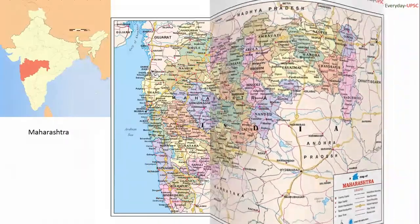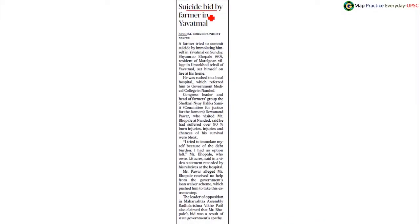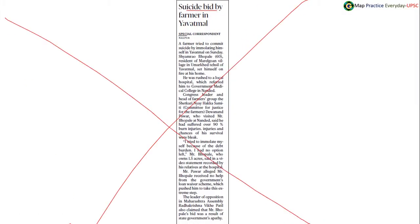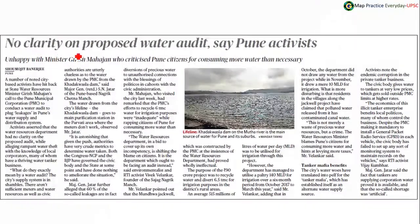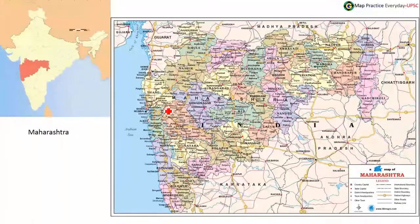There is also a news of a suicide bid by a farmer in Yavatmal. Yavatmal is a district in Maharashtra located in the eastern part of the state. Maharashtra is coming again and again in the news today. Also, Pune is a district in Maharashtra — Pune is located here in the map of India.